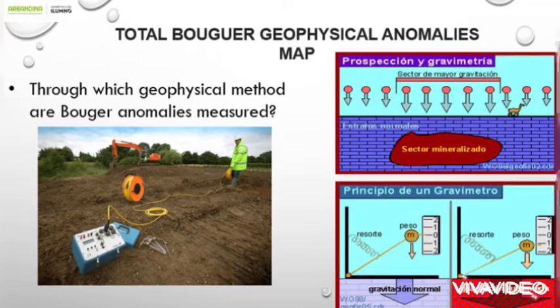Through which geophysical methods are Bouguer anomalies measured? The method used is the gravimetric method. This method consists of the measurement of the acceleration of gravity on the terrain in order to detect the variation of densities in the geological units present in the subsurface. Geodata measures the acceleration of gravity using a gravimeter. The interpretation of gravimetric and magnetic anomalies is based mainly on the recognition of their distribution and shape.